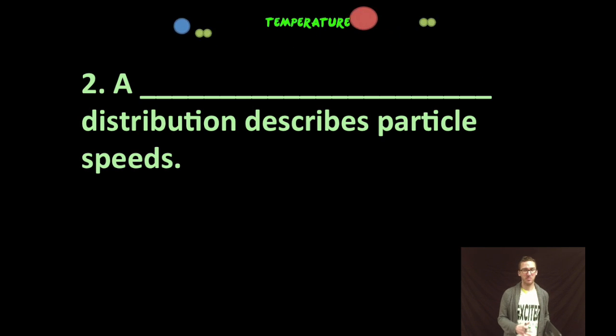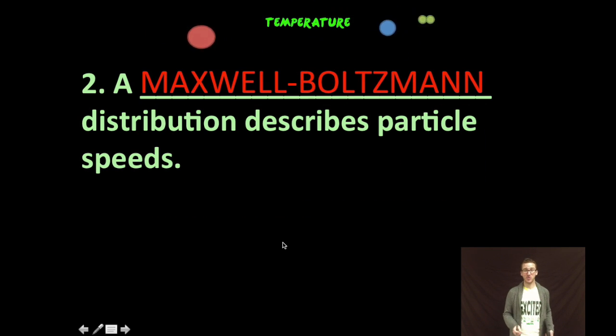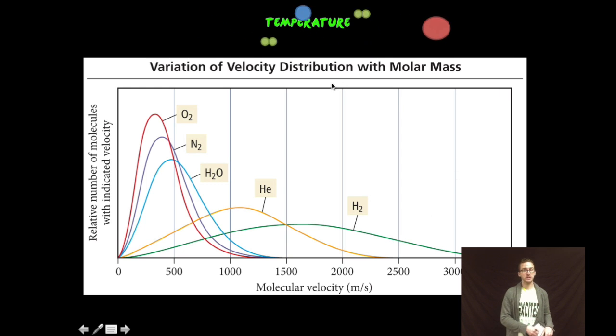Now, in addition to interpreting particle representation with vectors, you also want to be able to look at and interpret Maxwell-Boltzmann distributions, which is another way to describe particle speeds. As you look at this first example in your notes, you're given a series of different gases all at the same temperature. And notice that each gas has its own distribution at a given temperature.